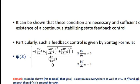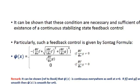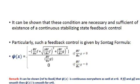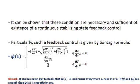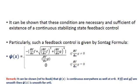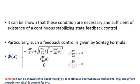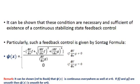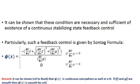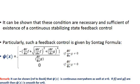It can be shown that these conditions are necessary and sufficient for the existence of a continuous stabilizing state feedback control — refer to the textbook for the proof. When these two conditions are fulfilled, we can obtain a continuous stabilizing state feedback control. One such control can be obtained using Sontag's formula, which is given here: psi(x) equals zero if the partial derivative of V with respect to x times g equals zero, and equals a specific function otherwise when that partial derivative is not equal to zero.